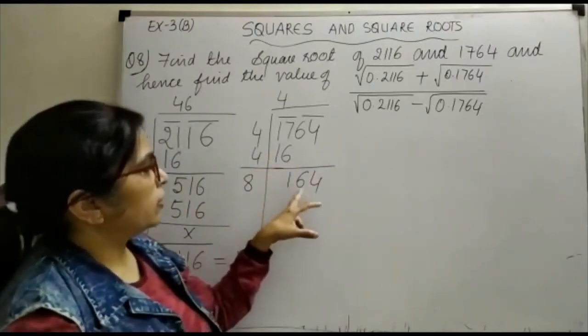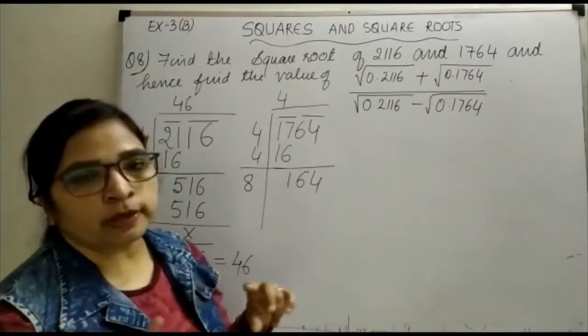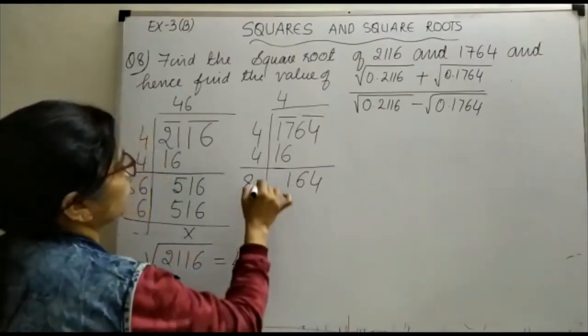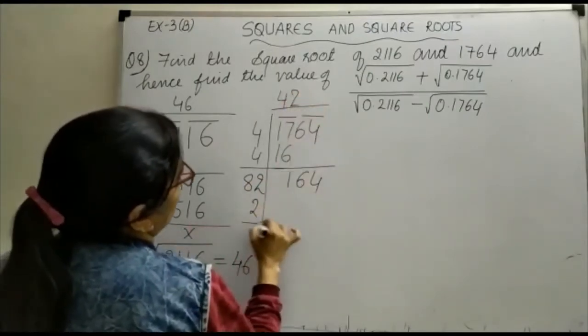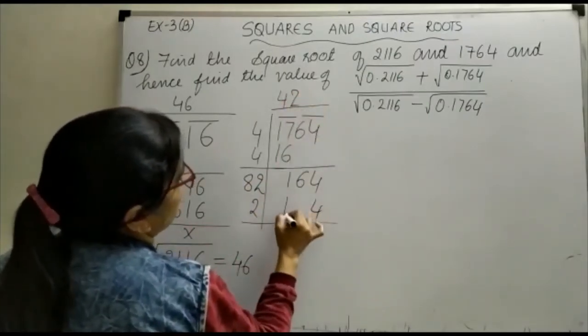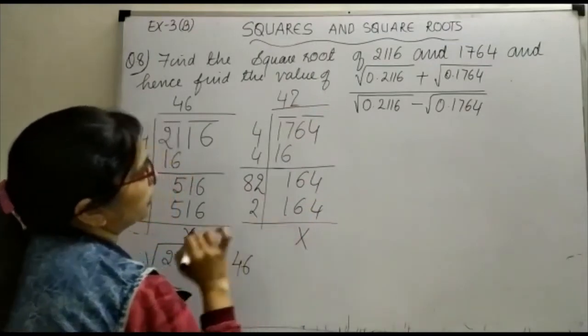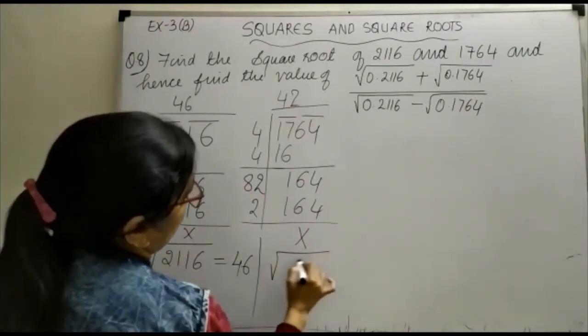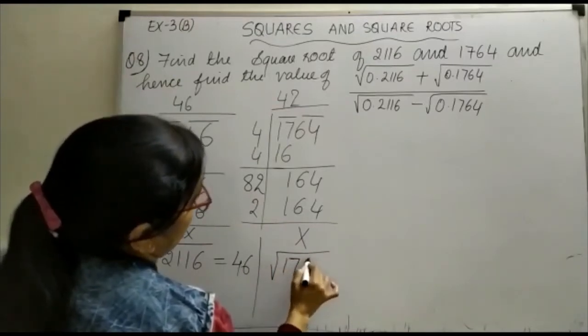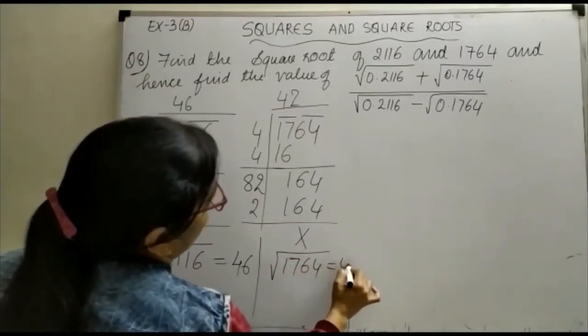अब यहां पर देखिए, यह 164 है. 4 आपका किसमें आएगा? 2 में आएगा, एक में. तो आप 2 से check कर लीजिए, क्योंकि number is smaller than 1. 2 तो आपने देखा, 2 times 2 is 4, 2, 8 times 2 is 16. और यह यहां पर. इसका square root हो गया आपका, the square root of 1764 is 42.